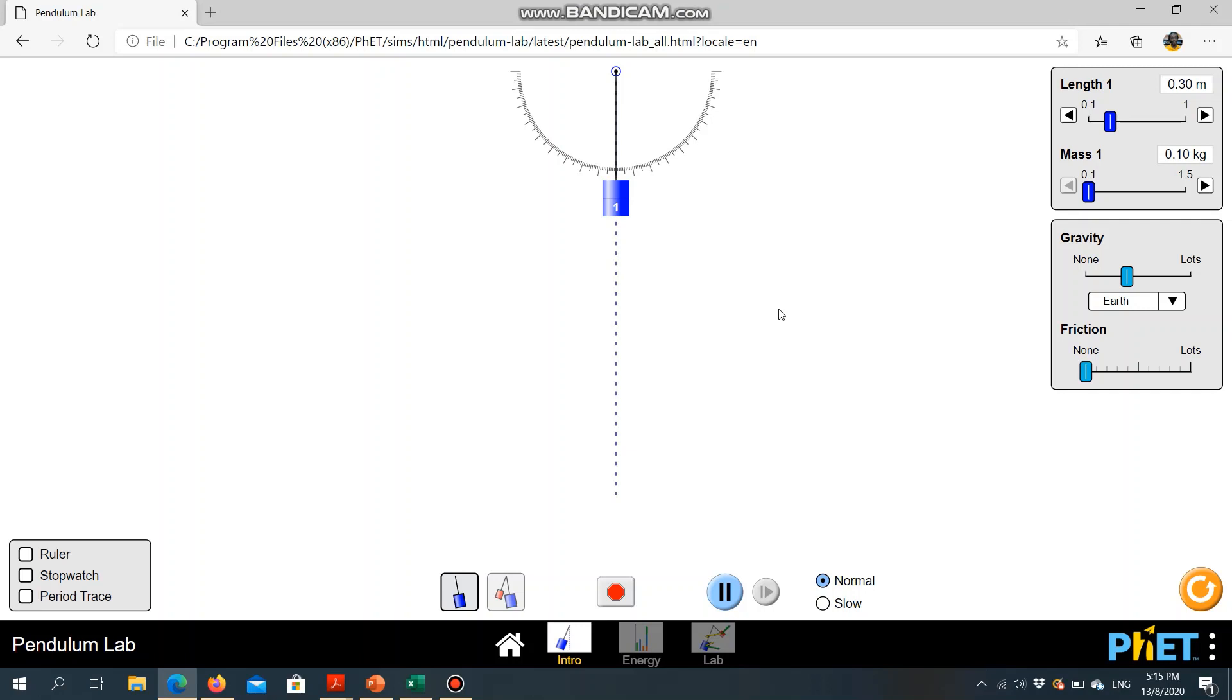Now, we can change the length and see how it affects the period. But first of all, let's use a stopwatch. We are going to look at say 10 oscillations. We are going to start when it goes through the center. 1, 2, 3, 4, 5, 6, 7, 8, 9, 10. That's 11.14 seconds.